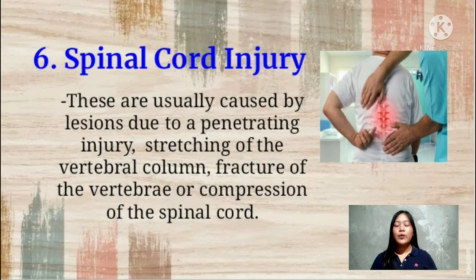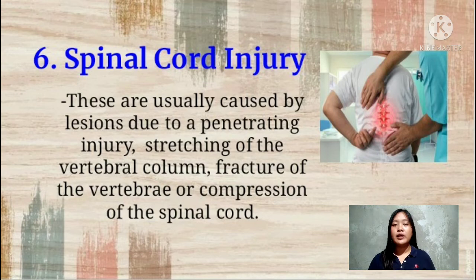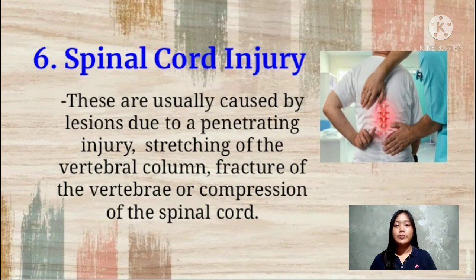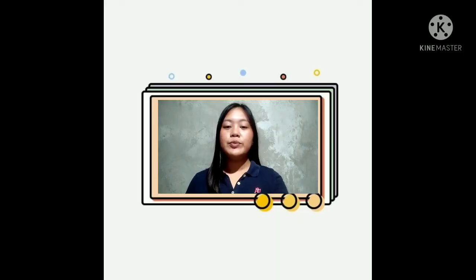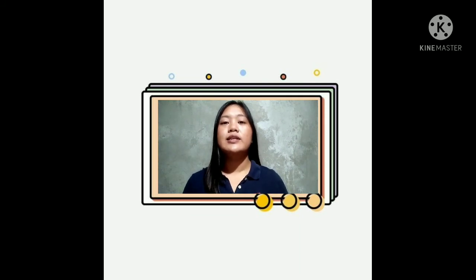The last condition is spinal cord injury. It is usually caused by lesions due to a penetrating injury, stretching of the vertebral column, fracture of the vertebrae, and compression of the spinal cord. That concludes the section on types and causes of health impairments, physical disabilities, and neurological conditions.